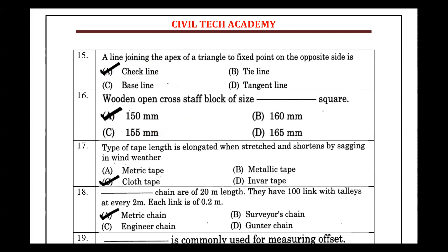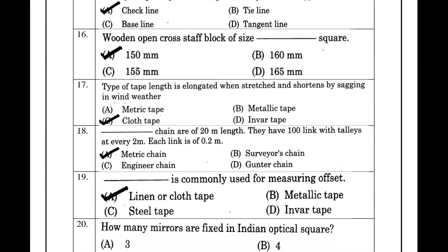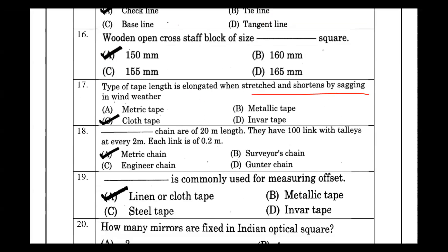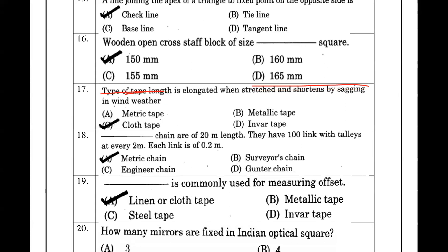Types of tape: a cloth tape is elongated when stretched and affected by sagging. In winter weather conditions, we can use a cloth tape. If we want to elongate or stretch, the cloth tape is suitable.